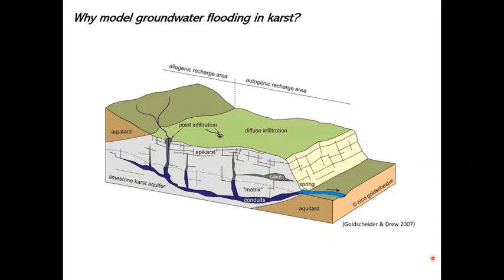There are also issues in terms of trying to quantify source protection areas. If there are pressures in the catchment — point infiltration or diffuse infiltration — and you're trying to delineate a source protection area for a spring, you'd be well placed to have a model. What I'm going to talk about today is mainly about modelling a karst system like this in terms of groundwater flooding.